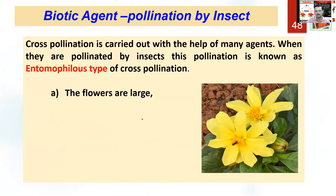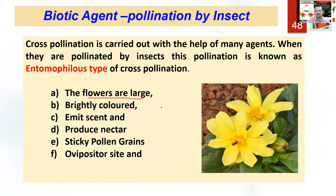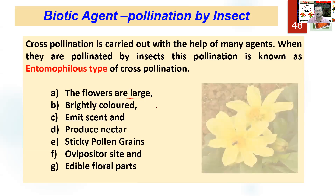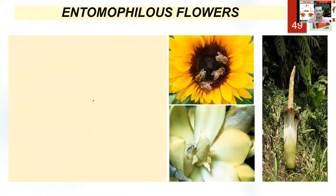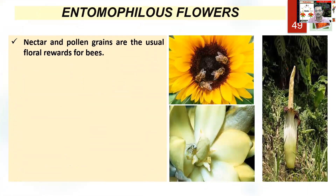Now entomophily — insect-pollinated flowers will be large with big petals capable of attracting insects. They are brightly colored, emit scent, and produce nectar to provide pollen reward to insects. There are also some very vicious adaptations seen in entomophilous flowers.